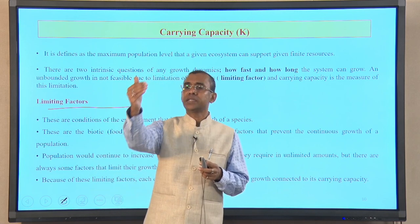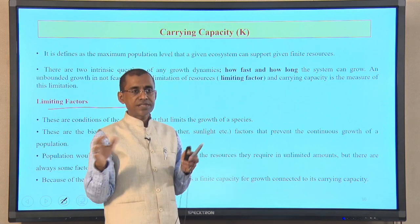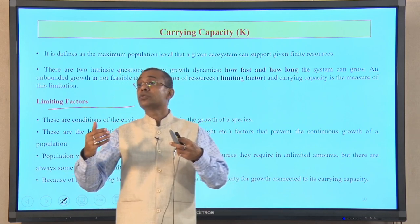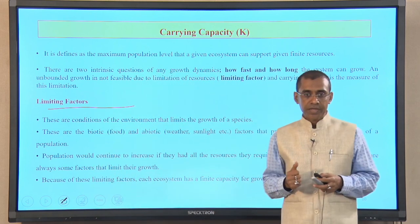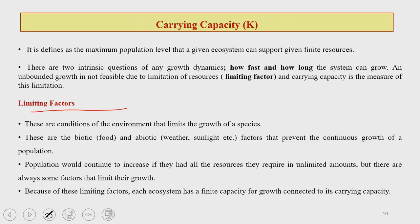Beyond certain limits, with the existing natural resources available, you may not be able to support that number of population. Population would continue to increase if it had all required resources in unlimited amounts. So you need certain limiting factors in the system to regulate growth. Because of these limiting factors, each ecosystem has a finite capacity of growth — that is what we call the carrying capacity of a system.